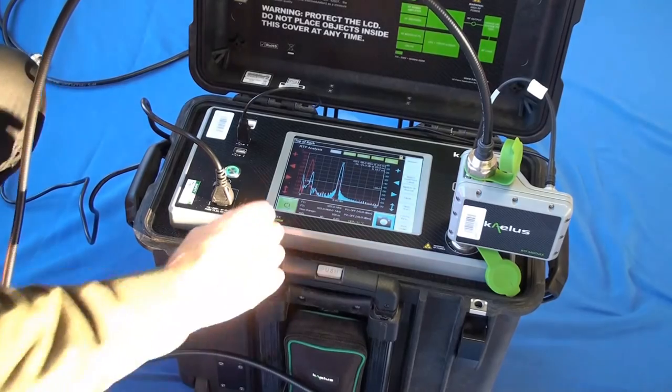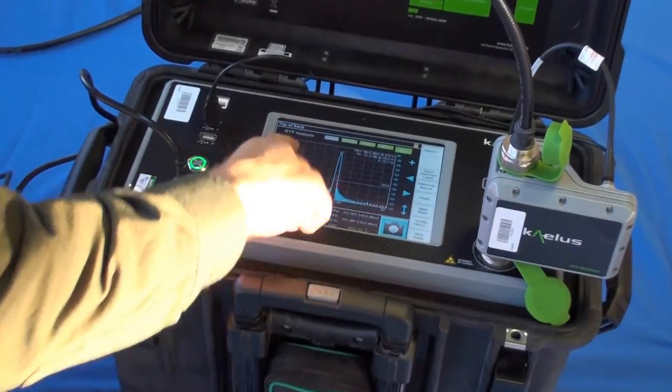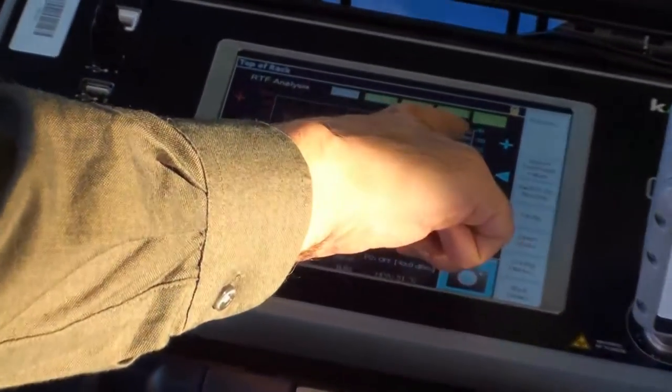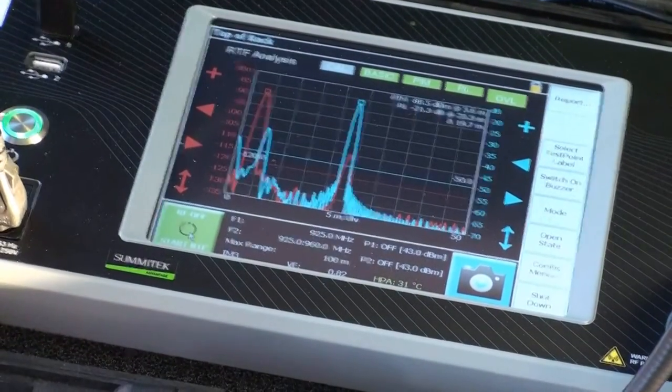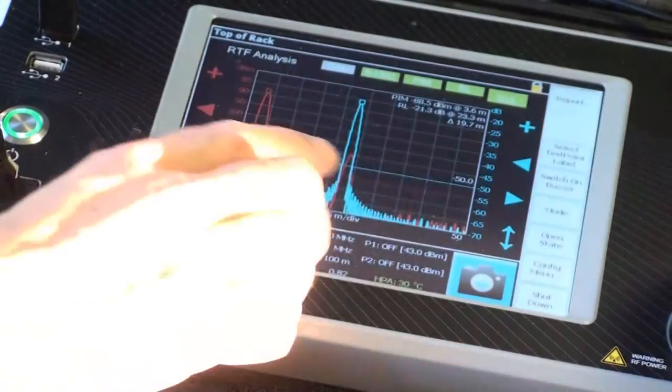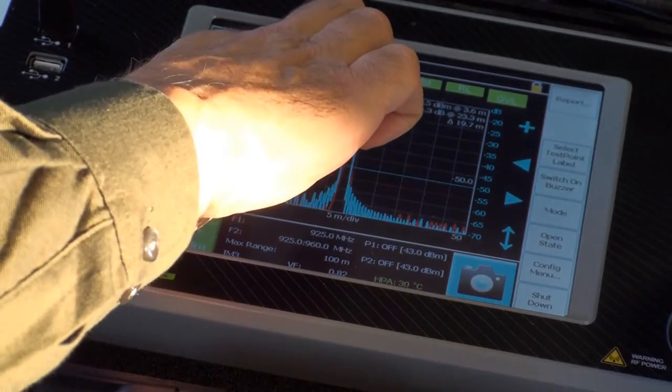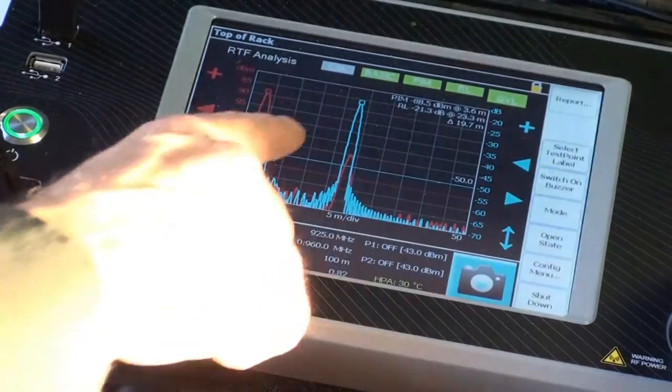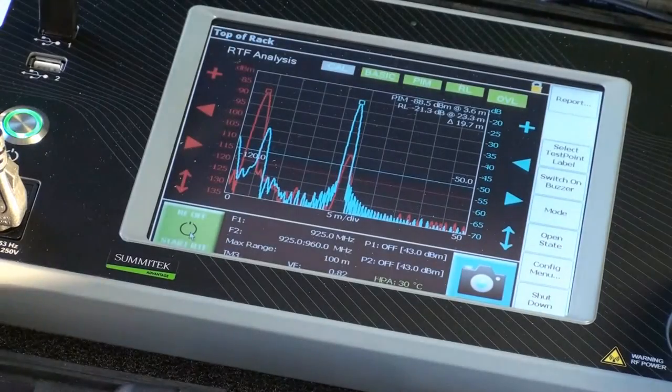What we can see now is we have a peak of PIM minus 88 at 3.6 meters. Now that is a PIM source which I added in there. So there's a little bit of inaccuracy in the measurement. But it's giving us 3.6 meters for that junction there.